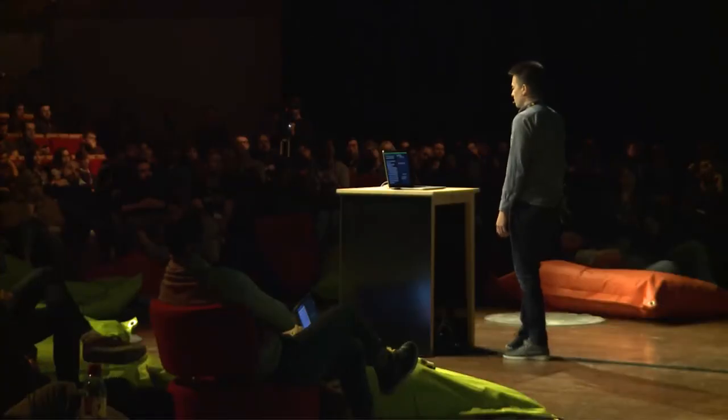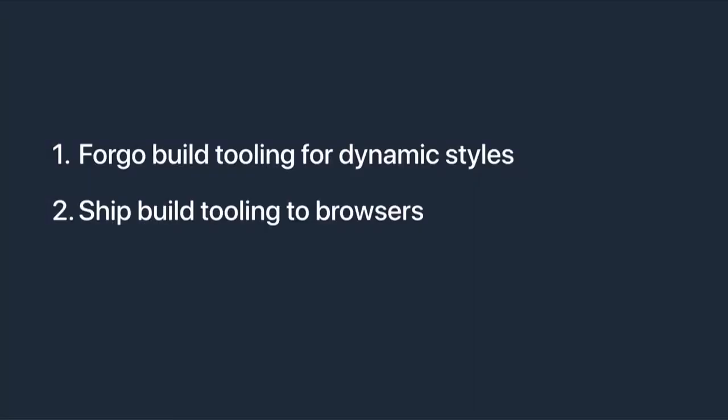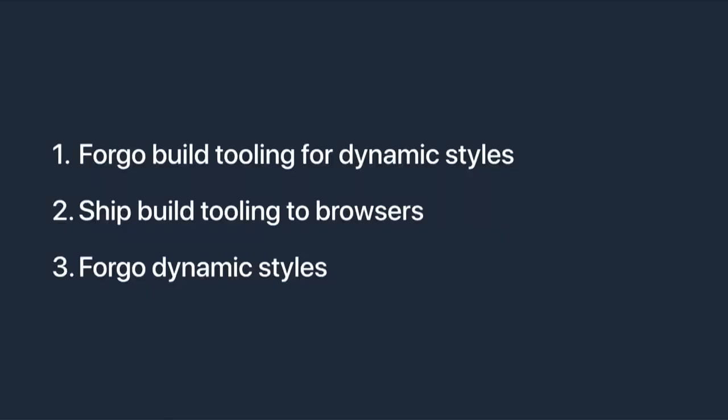So we basically have three ways to approach this problem. One: we could forgo build tooling for dynamic values, but this gives us an inconsistent developer experience. Two: we could ship the build tooling to the browser and do it at runtime — the standard approach for CSS-in-JS, but not a good experience for end users. Maybe in the future with WebAssembly this won't be as bad, but for now it's a real cost. Three: we could forgo dynamic values entirely, but dynamic styling is a core part of CSS-in-JS because JS is a dynamic language. So it seems we have no good options — but I think there's a path forward.